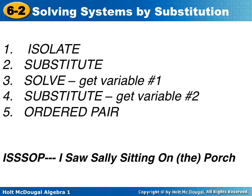So first we isolate, then we substitute into the other equation. Then we solve, so that we have one variable solved for. Then we substitute again, so when you're using substitution, you actually substitute twice. You substitute and get variable number two, and then you write your answer as an ordered pair. And this right down here is just a mnemonic, an acronym to hopefully help you remember the steps to solving by substituting.